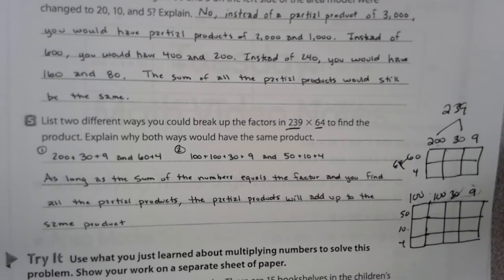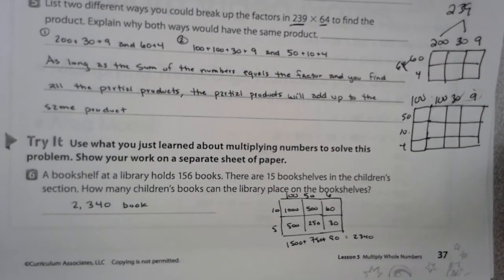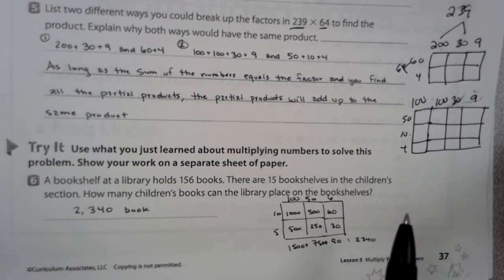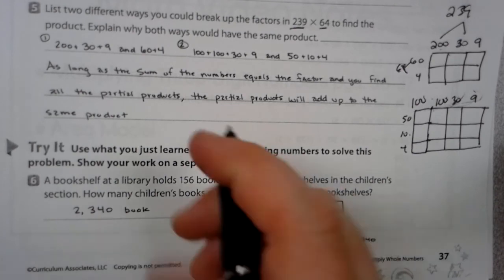It says, use what you've learned about multiplying numbers to solve this problem. Show your work on a separate sheet of paper. I didn't have a separate sheet of paper, so I worked my problem down here. It says, a bookshelf at the library holds 156 books. There are 15 bookshelves in the children's section. How many children's books can the library place on the bookshelf? Break it up into your area model. Break 156 into 100, 50, and 6. 15 into 10 and 5. And then you work your problem out. Your answer should come up to 2,340 books.